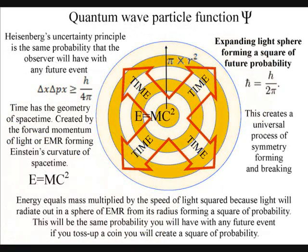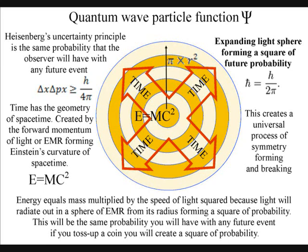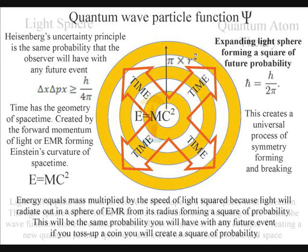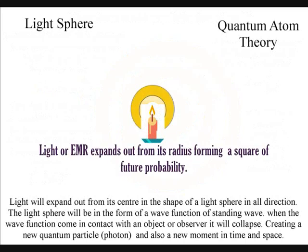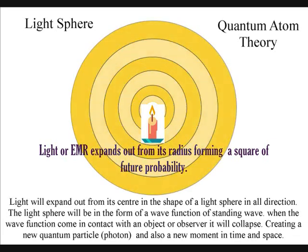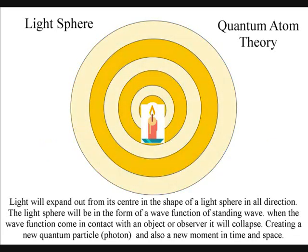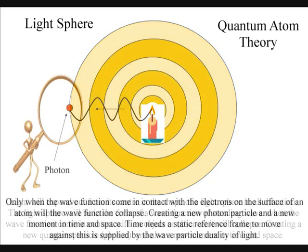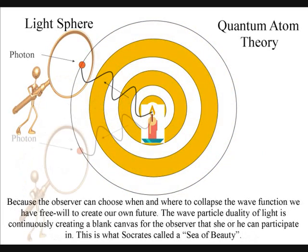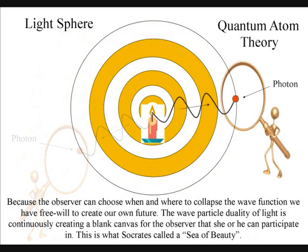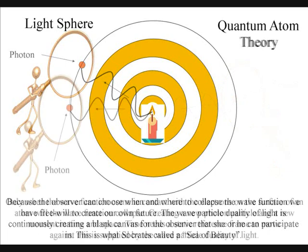In this theory, energy equals mass times the speed of light squared, because light will radiate out in spheres of electromagnetic waves from its radius, forming a square of future probability. We live in a dynamically evolving universe of continuous change because of the probabilistic nature of the wave-particle duality of light. Only if light waves come in contact with an object will they form new photons of quantized energy that will have a unique position in space and time.